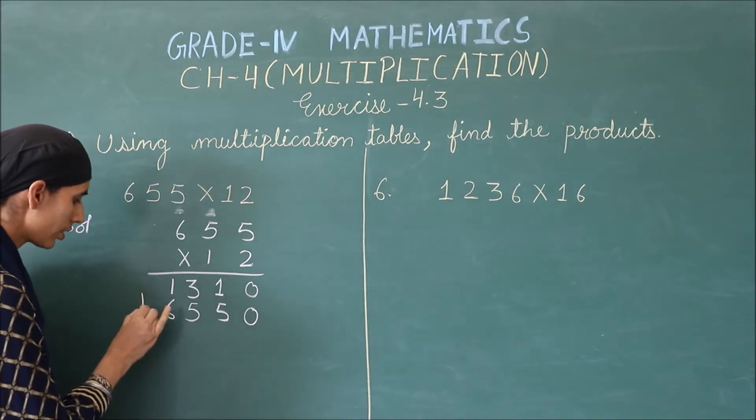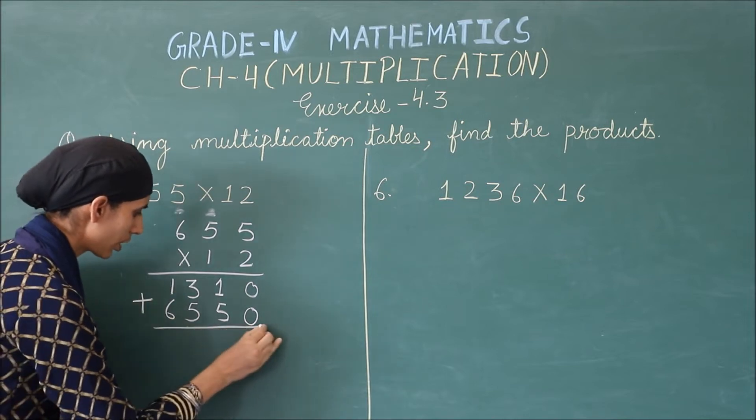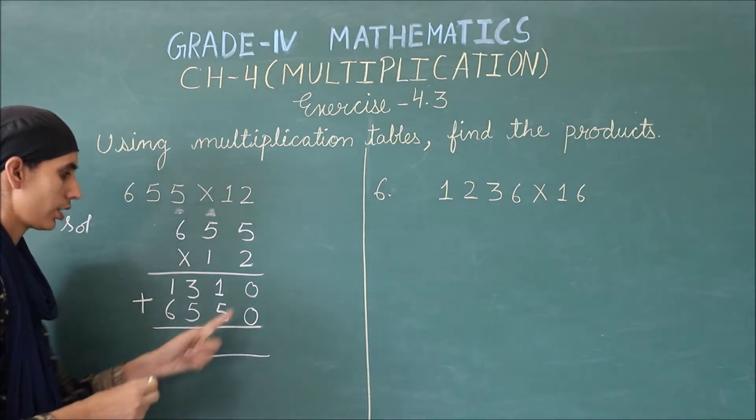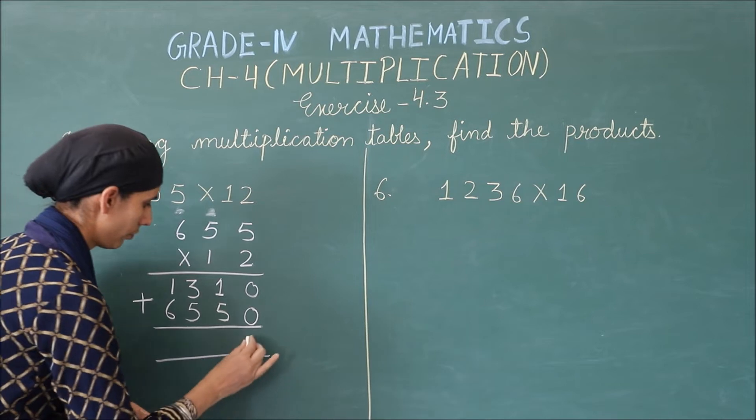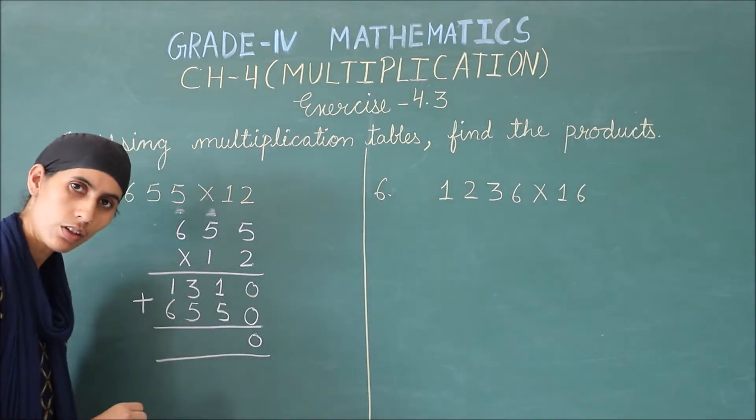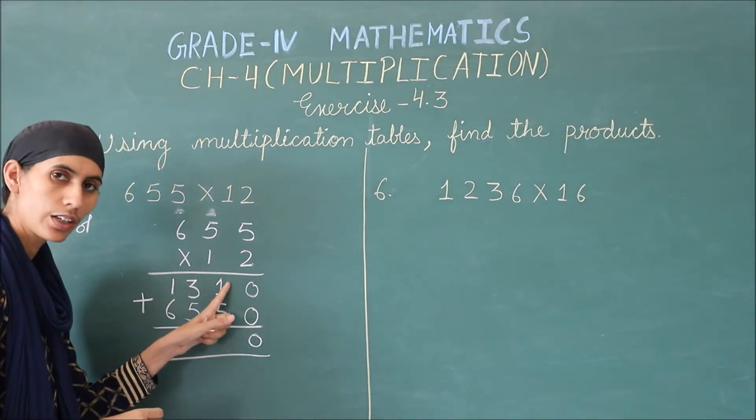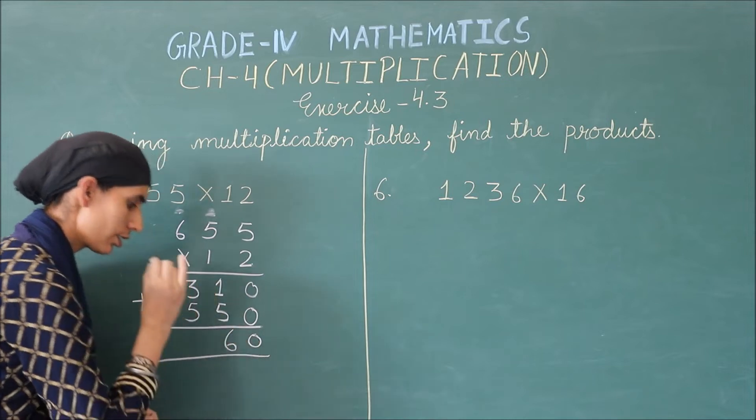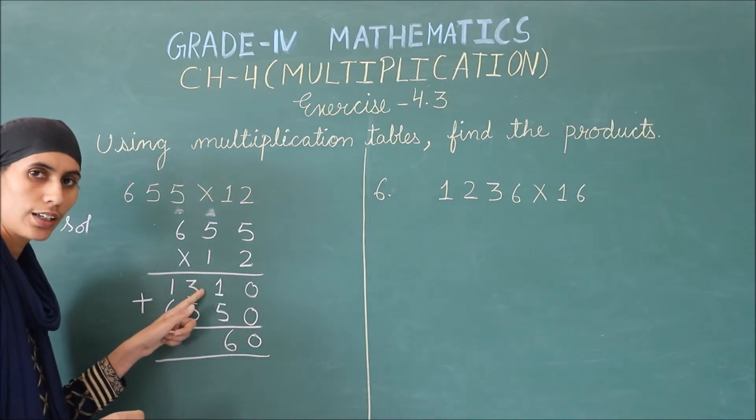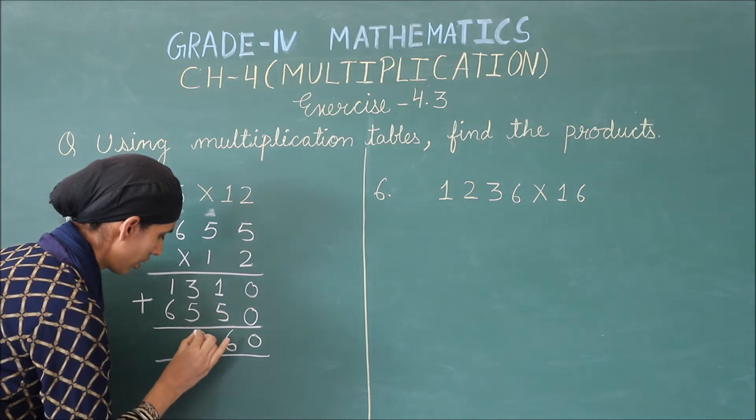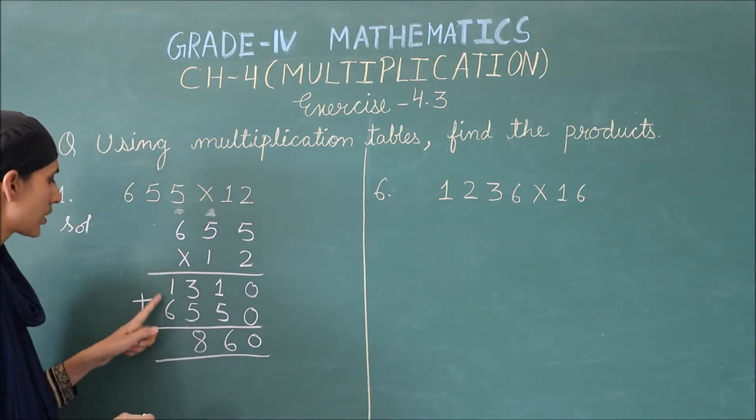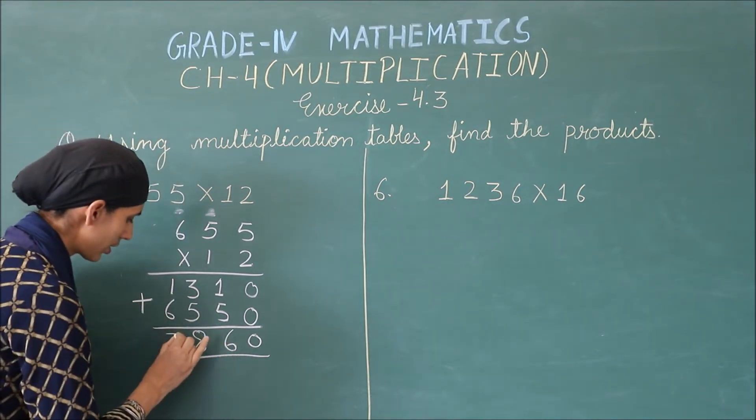Now we have multiplied. Next step is addition. So, we put the add symbol and we will add this. 0 plus 0 is 0. 5 plus 1 is 6. 5 plus 3 is 8.